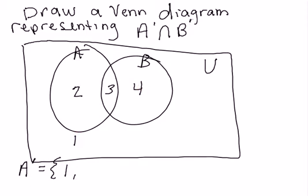So A complement is 1 and 4, and that's going to intersect with B complement. I need to know what is B complement - that's everything not in B. So there's B, and what's not in B is regions 2 and 1.